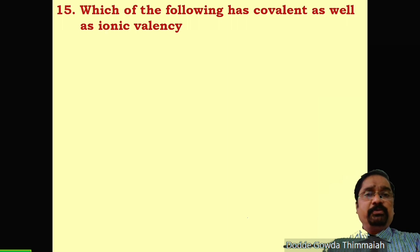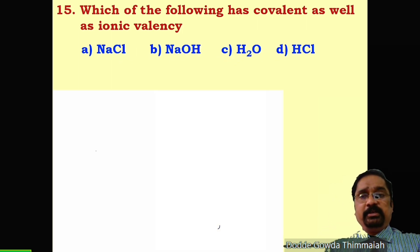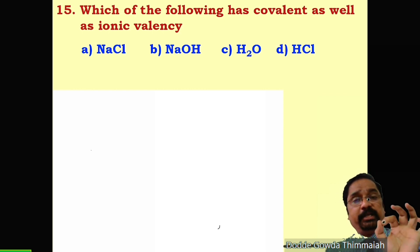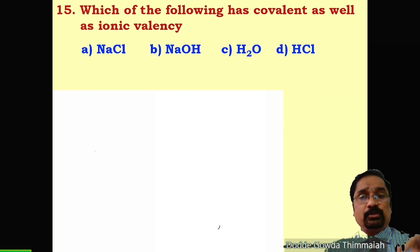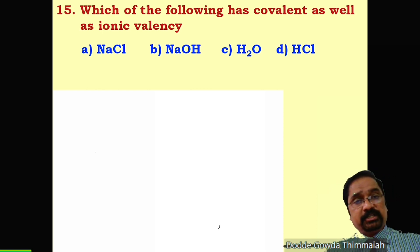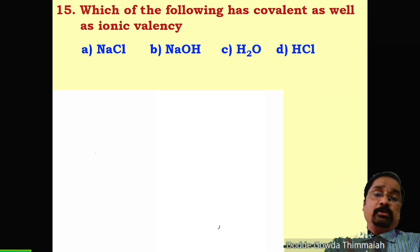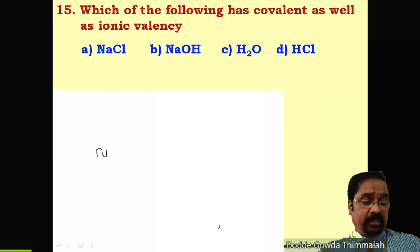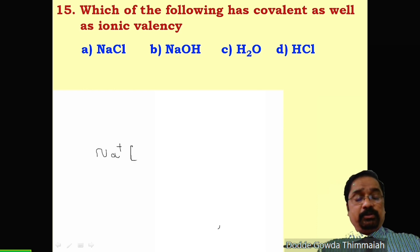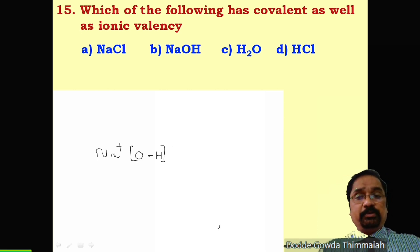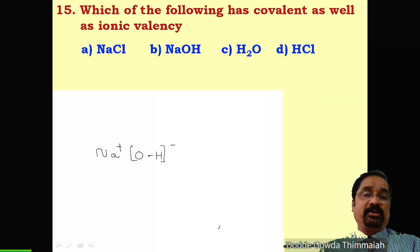Question 15: Which compound has both covalent and ionic bonds? NaCl has only ionic bond; H₂O and HCl have only covalent bonds. NaOH has Na⁺ (cation) and OH⁻ (anion) joined by an ionic bond, while the O–H bond within the hydroxide ion is covalent. Therefore, NaOH has both ionic and covalent bonds. The correct answer is B (NaOH).